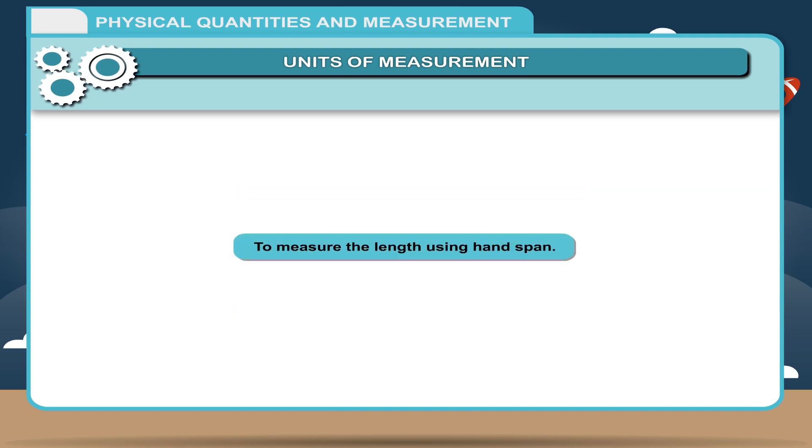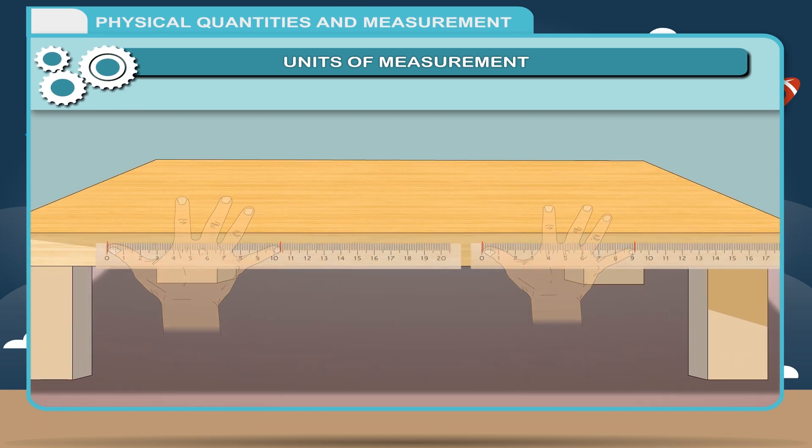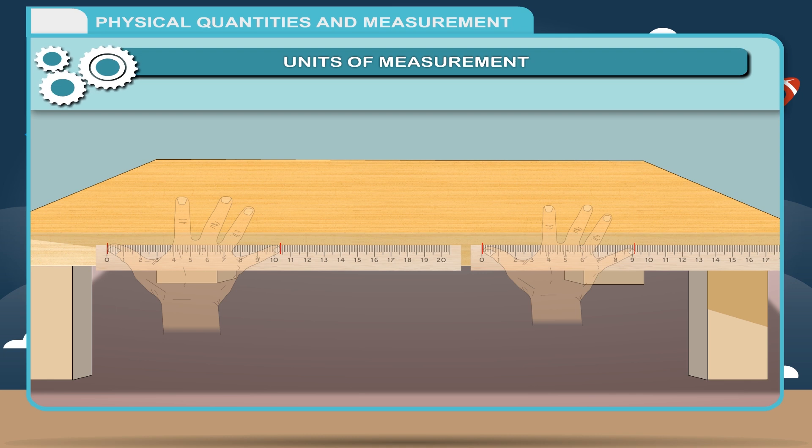Activity: To measure the length using hand span. Use your hand span to measure the length of the table. Now, ask your friend to use his hand span to measure the length. You will notice that there is a difference between the two measurements. Therefore, for reliable and accurate measurement, we need the standard units of measurement.